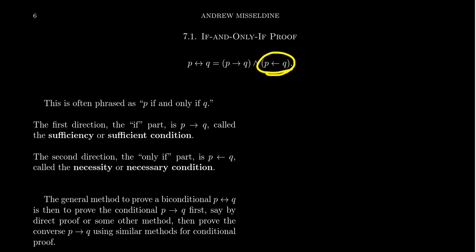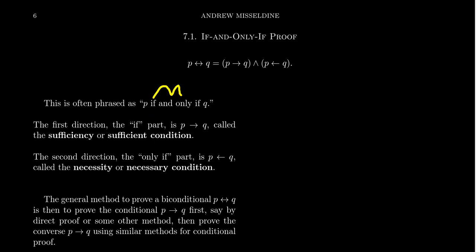These biconditional statements are often read as 'P if and only if Q.' This if and only if statement is often abbreviated in mathematics as IFF. So if you ever see IFF, that's not a misspelling of 'if' — that's actually an abbreviation for 'if and only if.' So 'if and only if' is a biconditional statement.